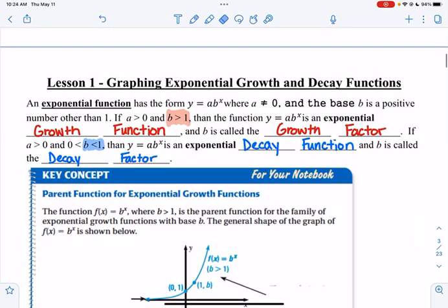An exponential function has a form of a times b^x, so your exponent has to be a variable. The base is a positive number other than one, because if you just multiply one over and over again, it doesn't change anything.